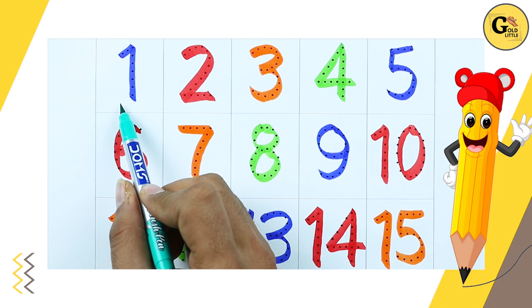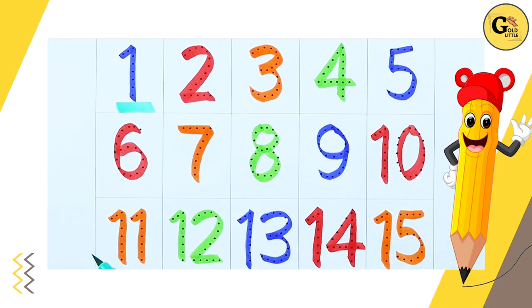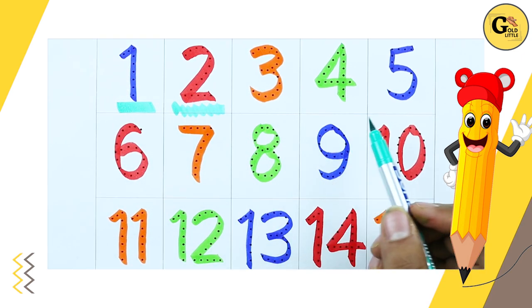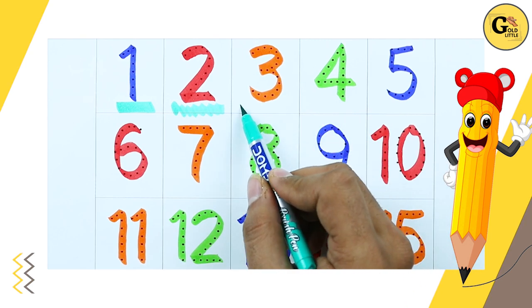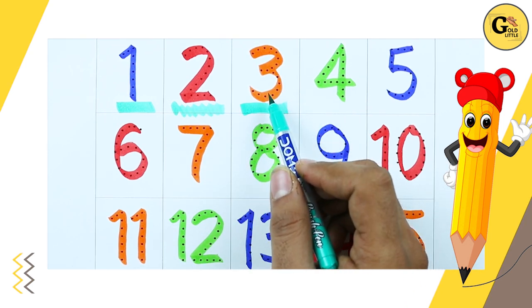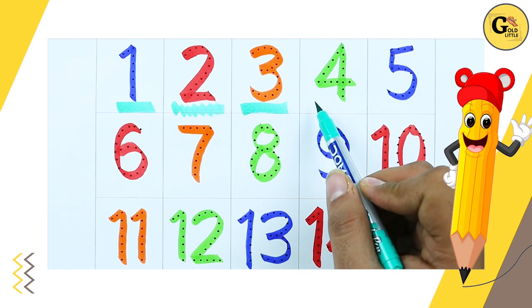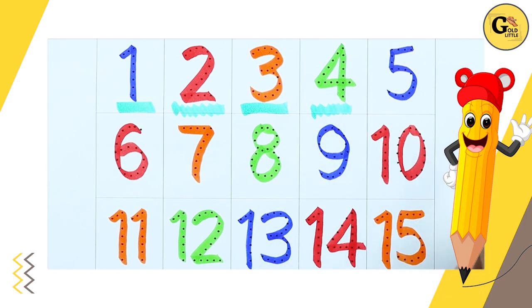It's number 1 with blue color. Number 2 with red color. Number 3 with orange color. Number 4 with green color.